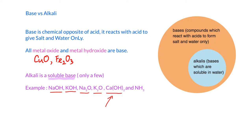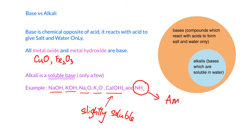Group 1 metals form soluble bases. We also have calcium hydroxide, but pay attention — calcium hydroxide is only slightly soluble, meaning not completely soluble in water. A small amount can dissolve in water. We also have ammonia, which is an alkaline gas. It can dissolve in water to give an alkaline solution.